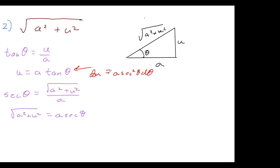When you have the pattern √(a²+u²), use the tangent substitution. We had a²-u² and a²+u². There's only one other combination we need: u²-a².